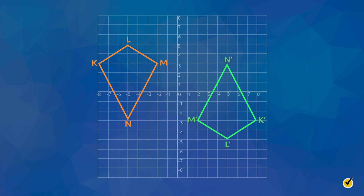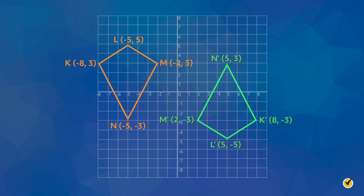Let's start by identifying the coordinates of the vertices of kite KLMN and of our rotated kite. A closer look at the coordinates of the vertices shows the coordinates of K'L'M'N' are the same as the vertices of the original kite, but with the opposite sign.